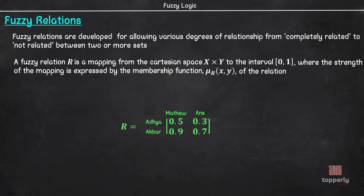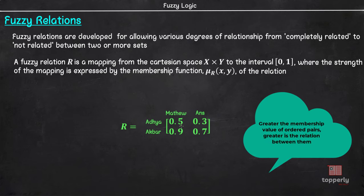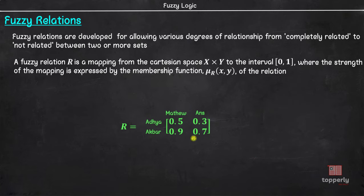As an example, consider the fuzzy relation R here. Seeing this relation matrix, we can interpret that Adhya is more close to Matthew than Anz because the corresponding membership values are 0.5 and 0.3 respectively. Similarly, we can say that Anz is more related to Akbar than Adhya. This way, fuzzy relations are more realistic than crisp relations which simply have 1 or 0. That is, crisp relations simply tell us whether they are related or not and not the degree of relation between them.